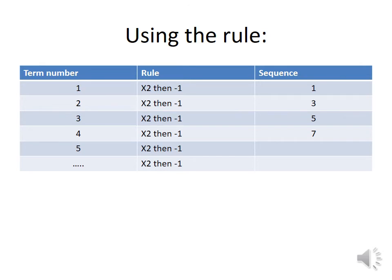So the first term, we multiply by 2 and then take away 1. 1 times 2 is 2, take away 1 and we get the sequence 1. The second part of the sequence is term number 2. If we have 2, lots of 2 and then take away 1, we get 3. And I think you can see how this then follows on for each part of the sequence.